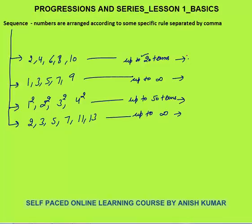The first sequence I have written for you is 2, 4, 6, 8, 10 up to 20 terms. First of all, this is a finite sequence. Why finite? Because the number of terms are finite. The logic behind this sequence is that you have even numbers — the first 20 even natural numbers. So that is the logic behind this sequence.